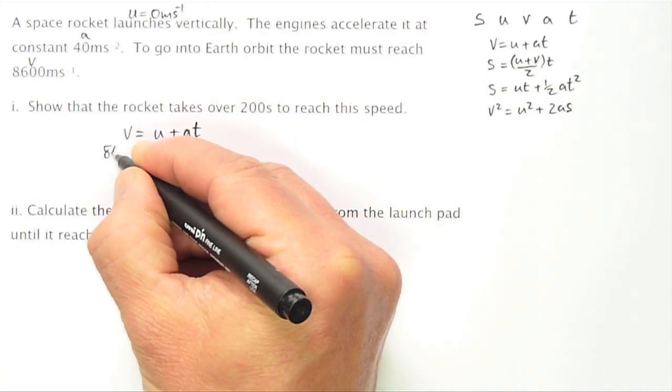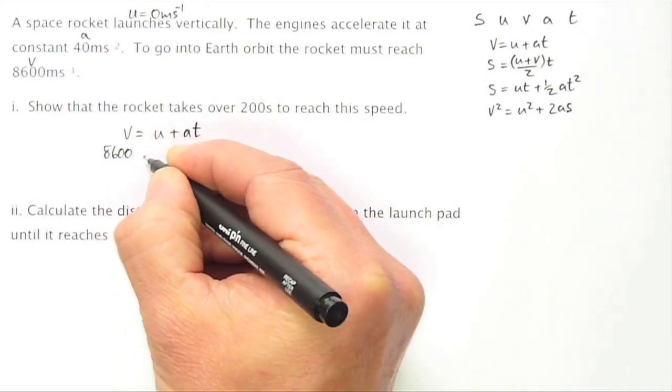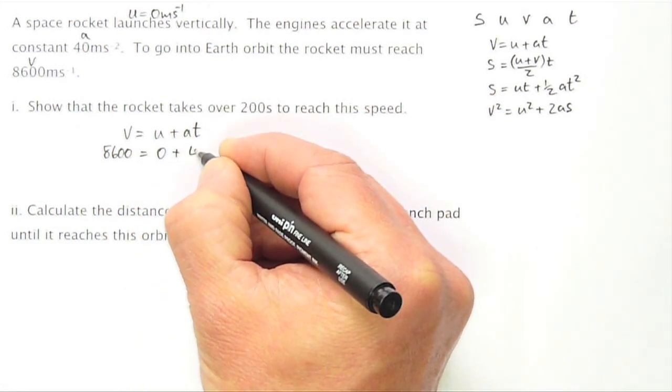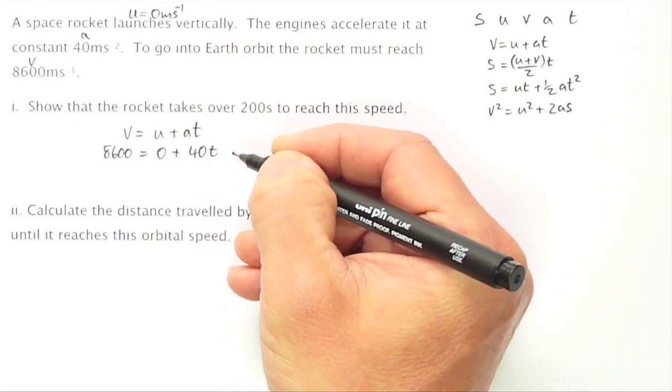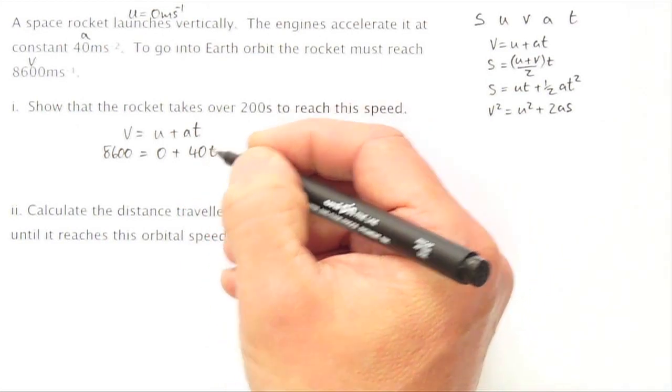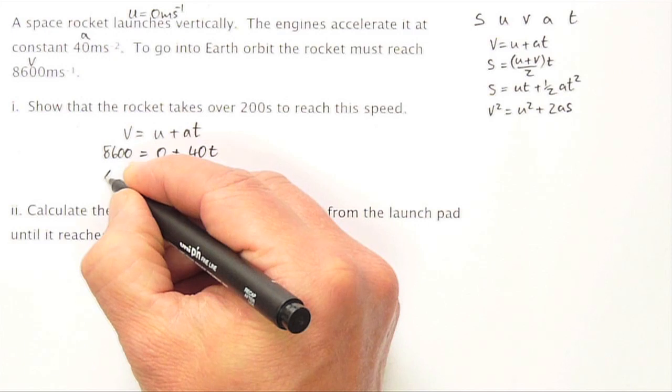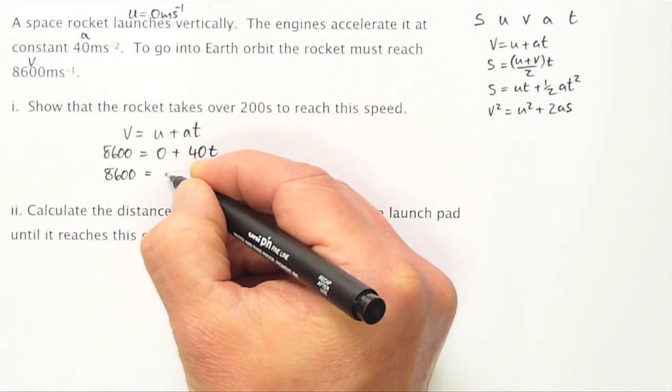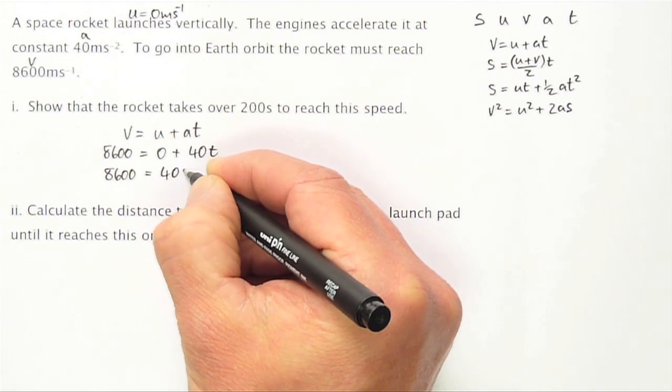8600 equals zero plus 40 times T, the T that we're trying to find. Let me just write that again to make it clear. 8600 equals 40 T.